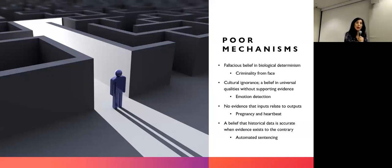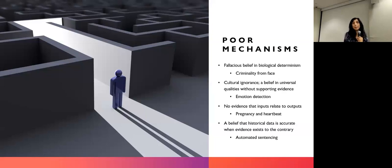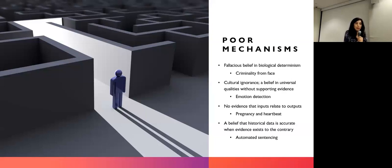There's also the problem where there's no evidence that relates the inputs to the outputs. We see this with biases that might relate zip code to credit — that's highly problematic, and your zip code can influence how much you pay in insurance. There's no valid mechanism there. And with the pregnancy versus the heartbeat example, there isn't a known mechanism — so it was already a flawed setup. Believing that historical data is accurate when evidence exists to the contrary gets at the problem of automated sentencing.